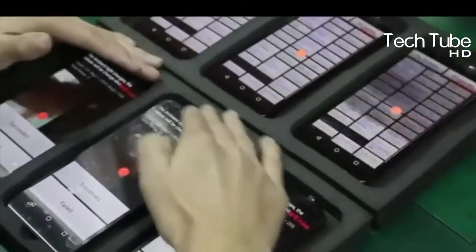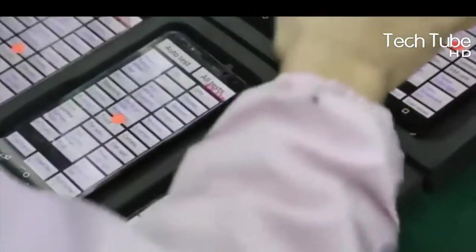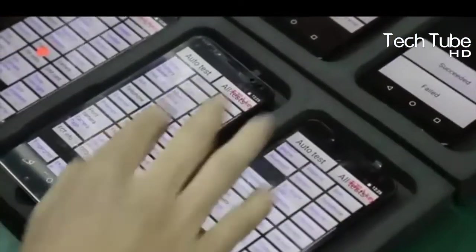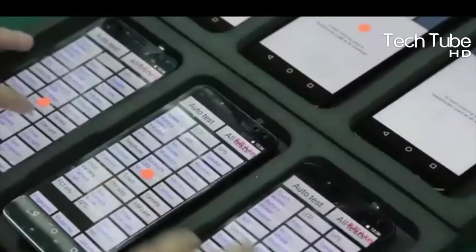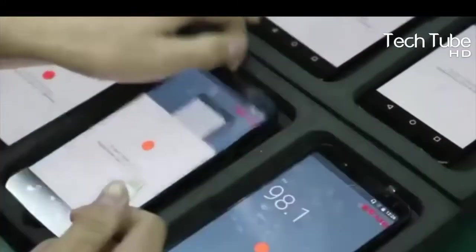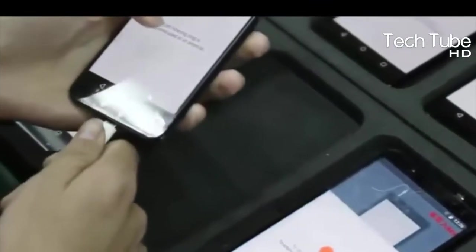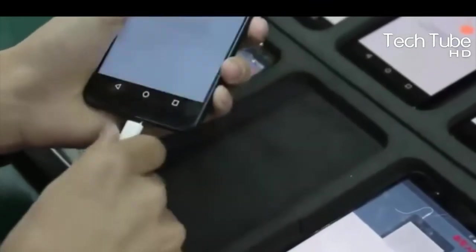The products are dispatched to the packaging lines where a specific number or code is given to each smartphone. The individual packed products are handed for large carton packaging in order to ship worldwide. After that, you can get your favorite phone at your nearest store.